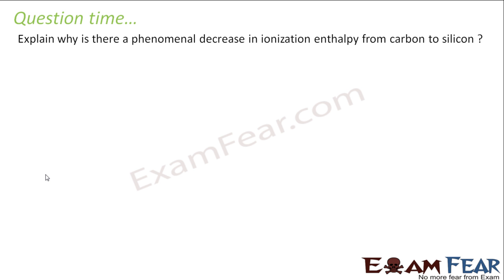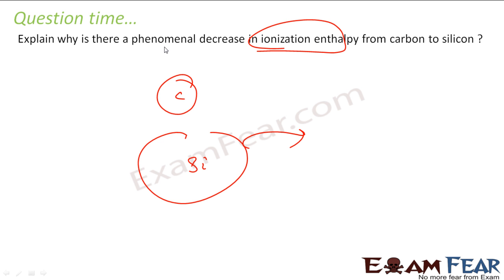The next question is why there is a decrease in ionization enthalpy from carbon to silicon. You will see this is my carbon and this is my silicon, little bigger. Size increases, easy to pluck electron, so ionization enthalpy decreases. We have discussed a lot on this. Because size increases, easy to pluck electron, so ionization enthalpy decreases.